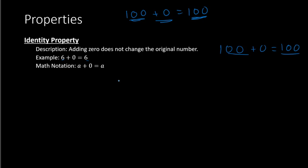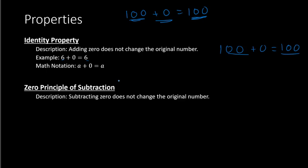Our fourth property is a property dealing with subtraction. We can state it as the zero principle of subtraction. It's kind of like the identity property, but instead of adding zero, we're going to subtract zero. So subtracting zero also does not change the original number. For example, if we had 8 minus zero, our answer is still going to be 8. It doesn't matter the size of the number — we can have 1,000 minus zero, that would still equal 1,000. It does not change the original value. So this is the zero principle of subtraction.